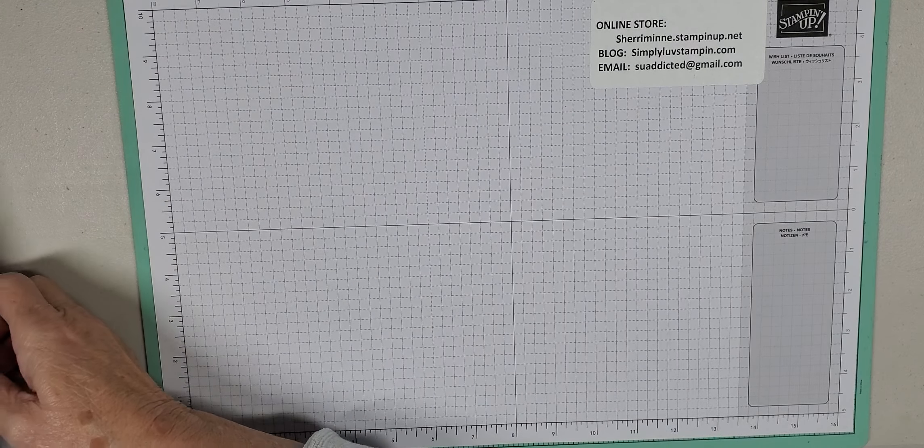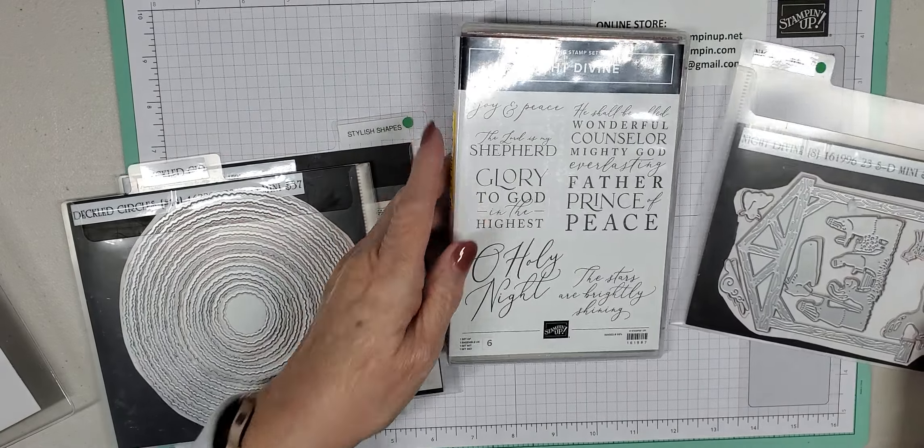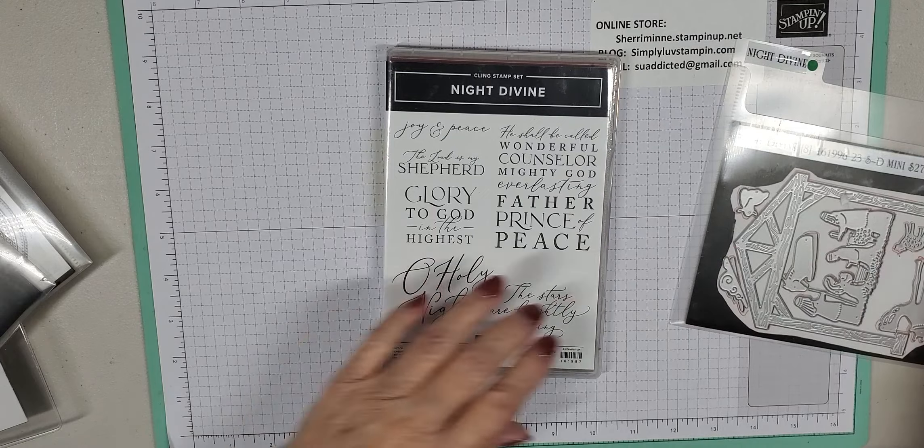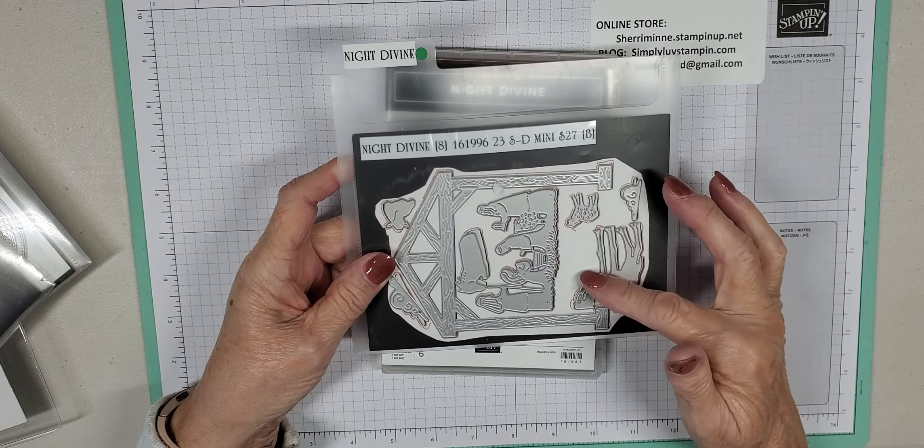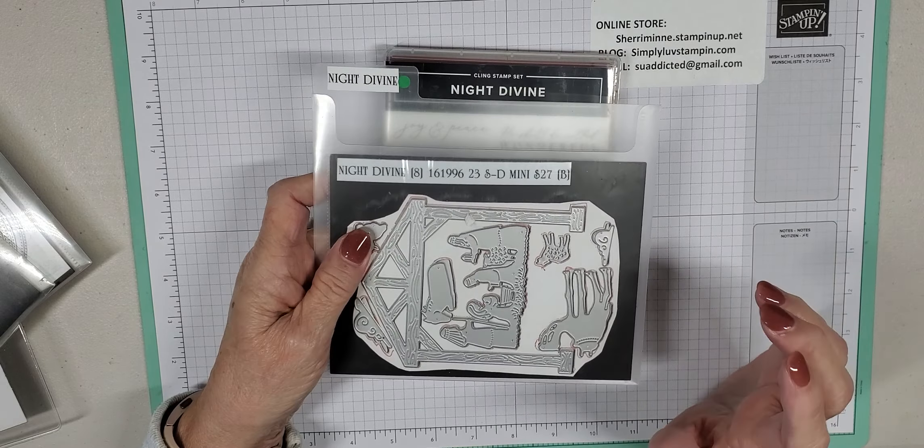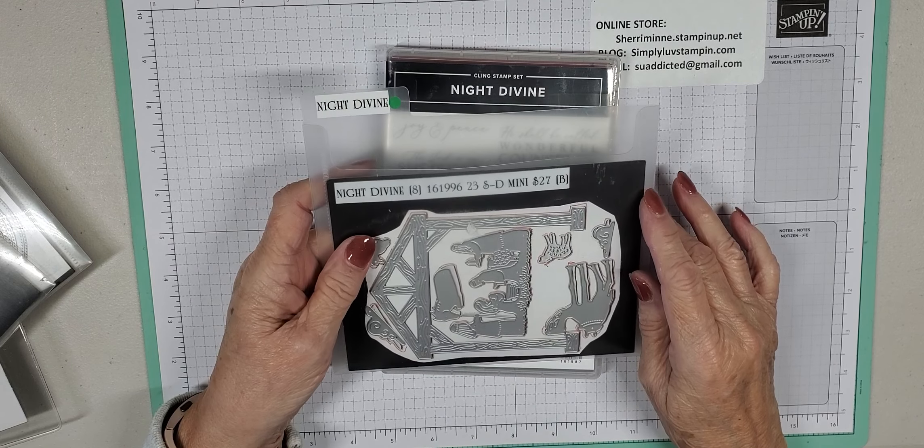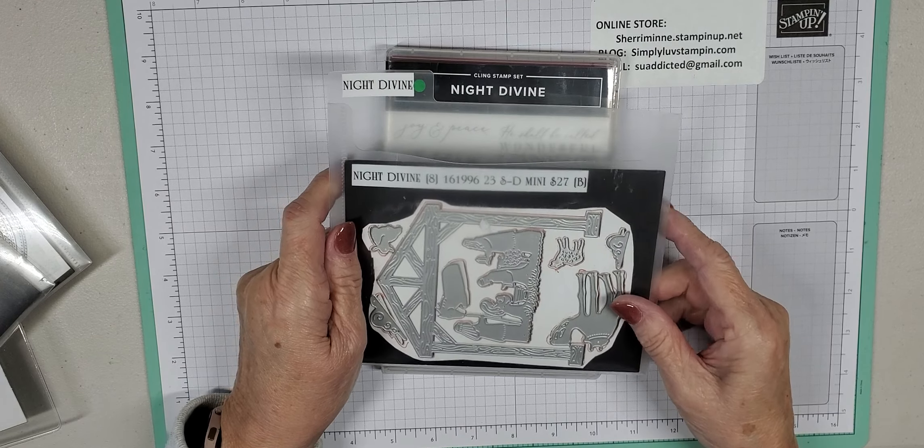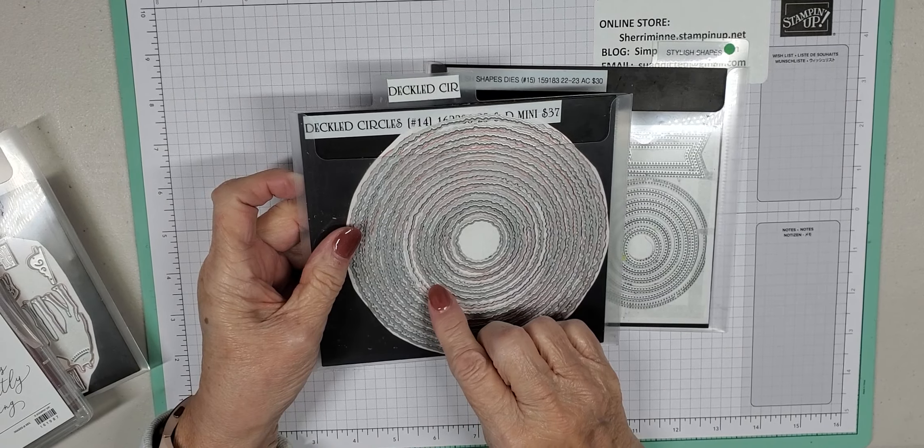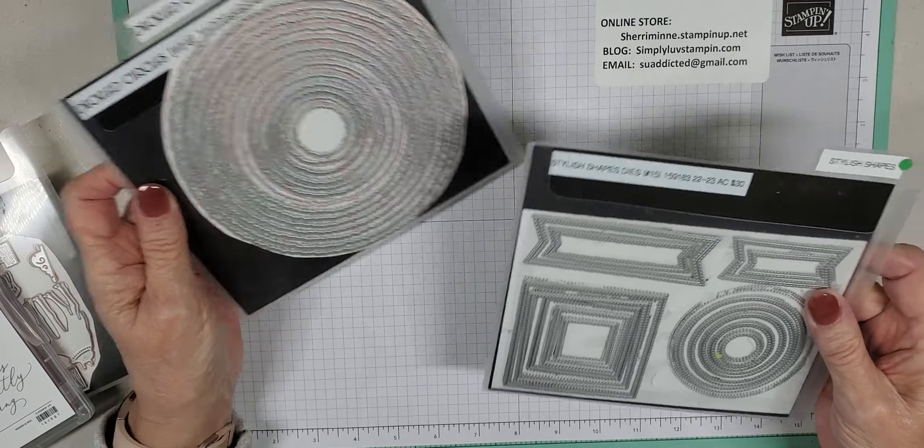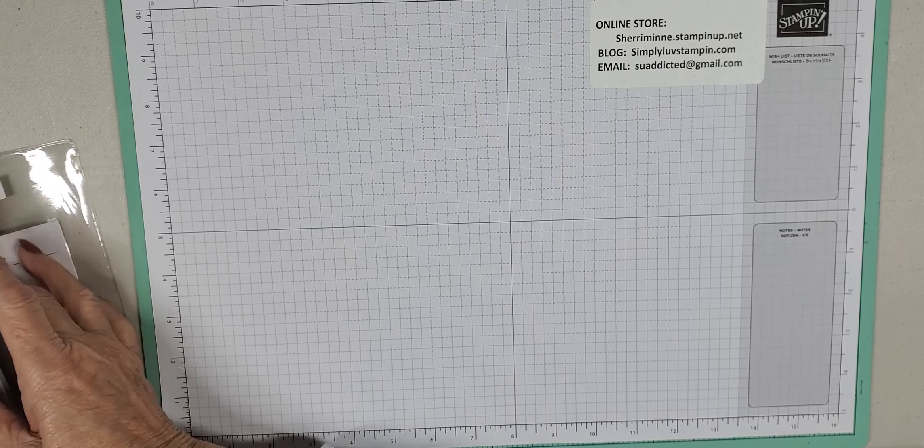We're using a new bundle from the new mini catalog that goes from September to January, called Night Divine. We're using the stamp set and several of the dies - the animals, and I use those for different decorations. Unfortunately somewhere in my studio I have lost the little four-legged sheep die and I'm going to be doing some major searching through trash cans. We're also using this stack of circle dies - I think I used numbers five and six on here - and then the largest stylish shapes circle dies.